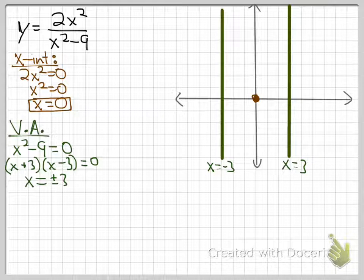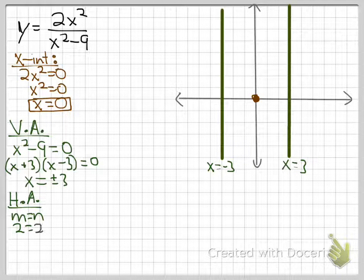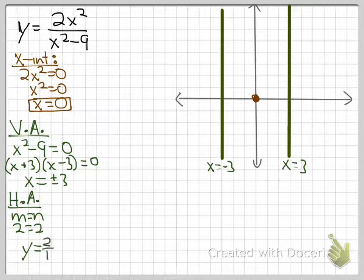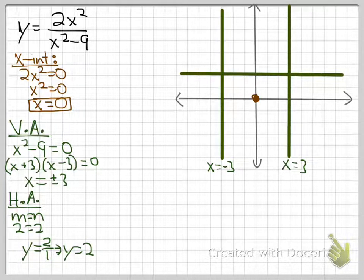For the horizontal asymptote, we have 2x squared on top and x squared on the bottom, so the degrees are equal — m equals n, since both are degree 2. When that's the case, the horizontal asymptote is the ratio of the leading coefficients, which is 2 over 1. So the horizontal asymptote is y equals 2. Now we have all the asymptotes and can start plotting points.